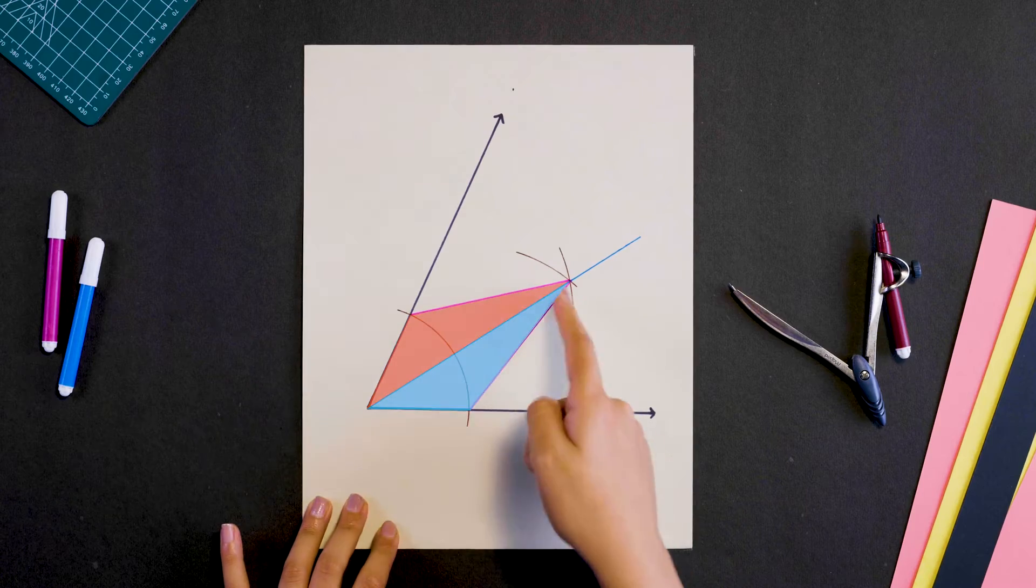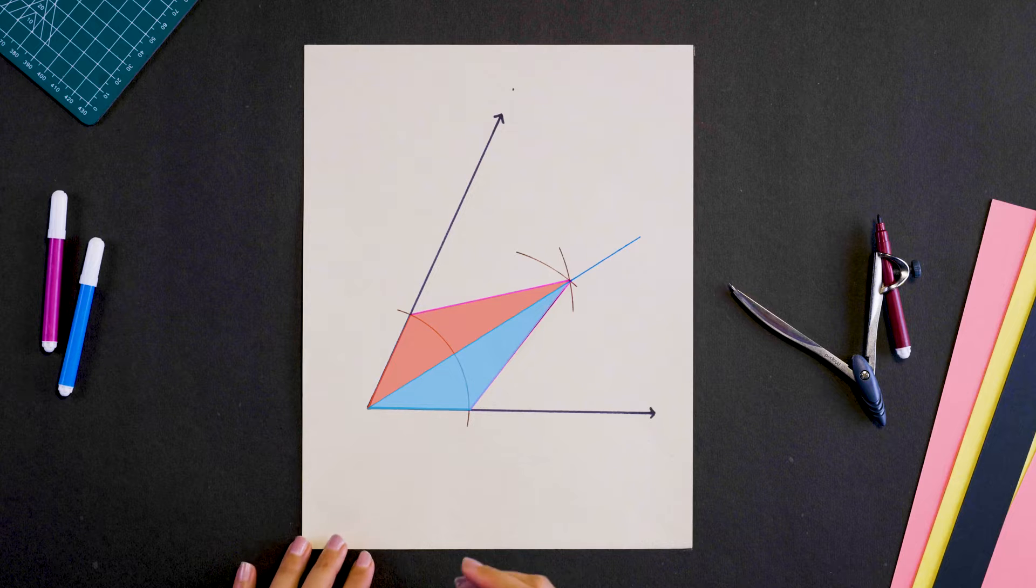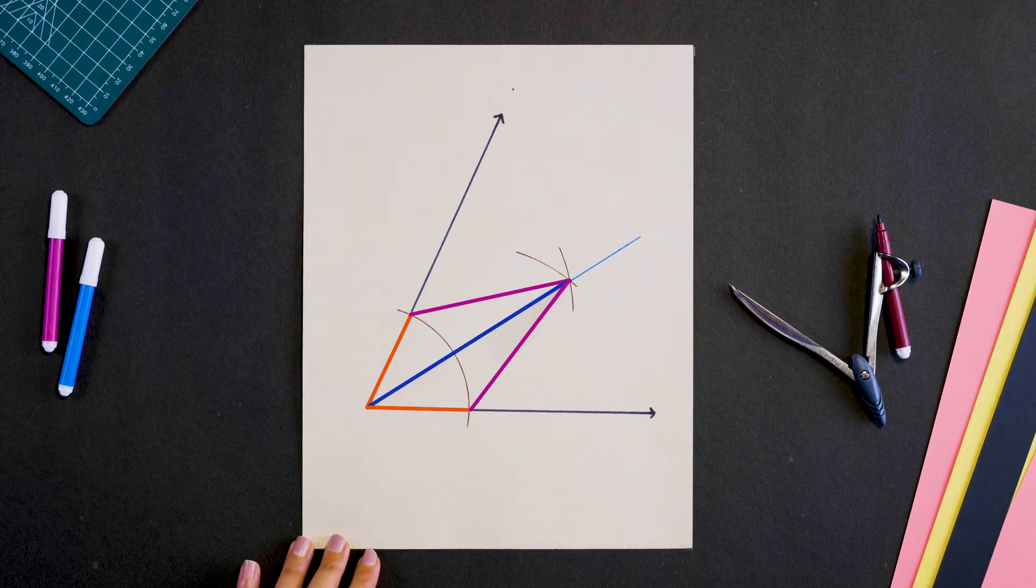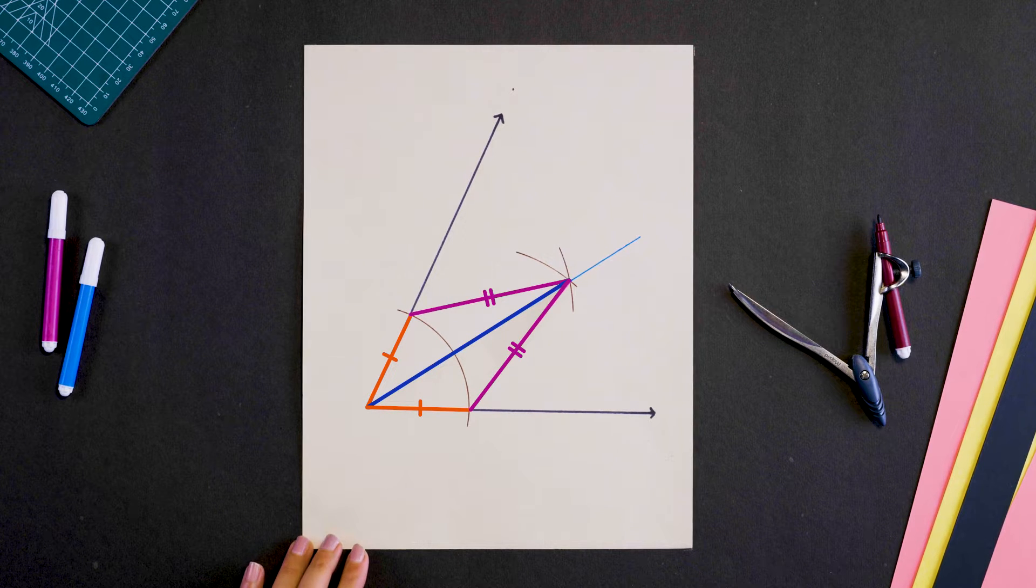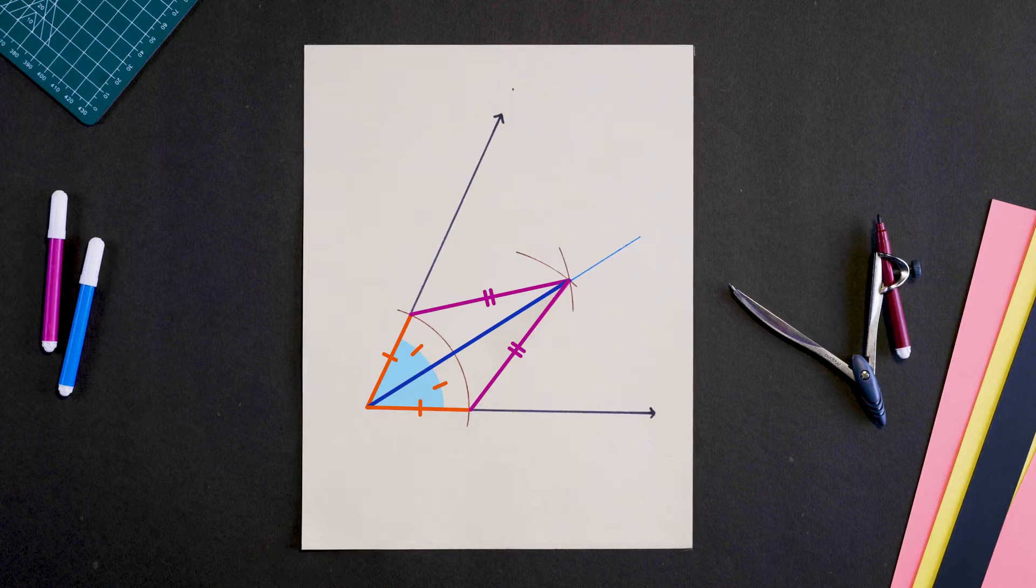By the way, if you are familiar with congruence rules, then these two triangles are congruent because all three of their sides are respectively equal. Hence, these two corresponding angles are also equal.